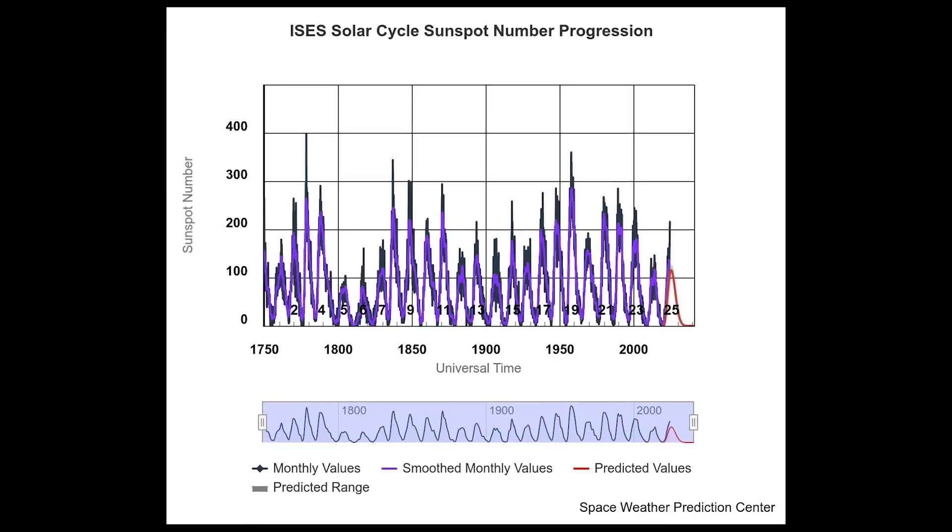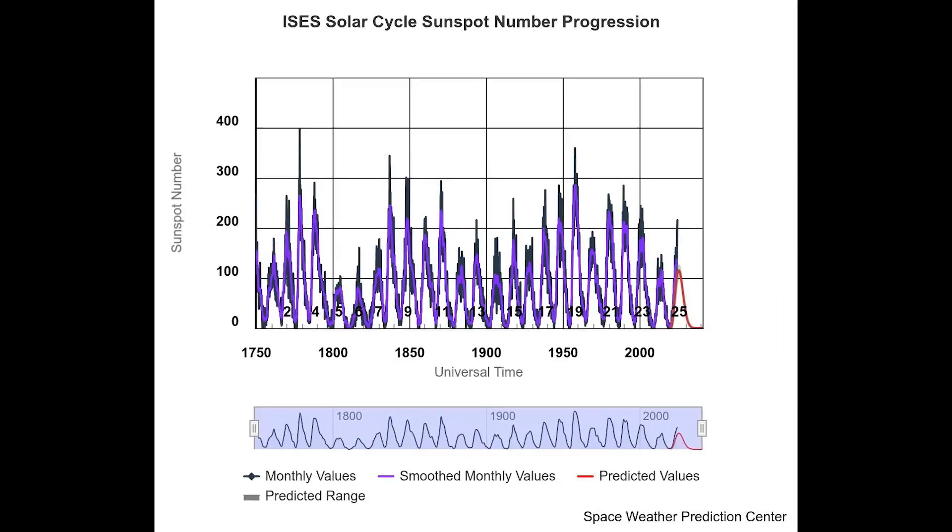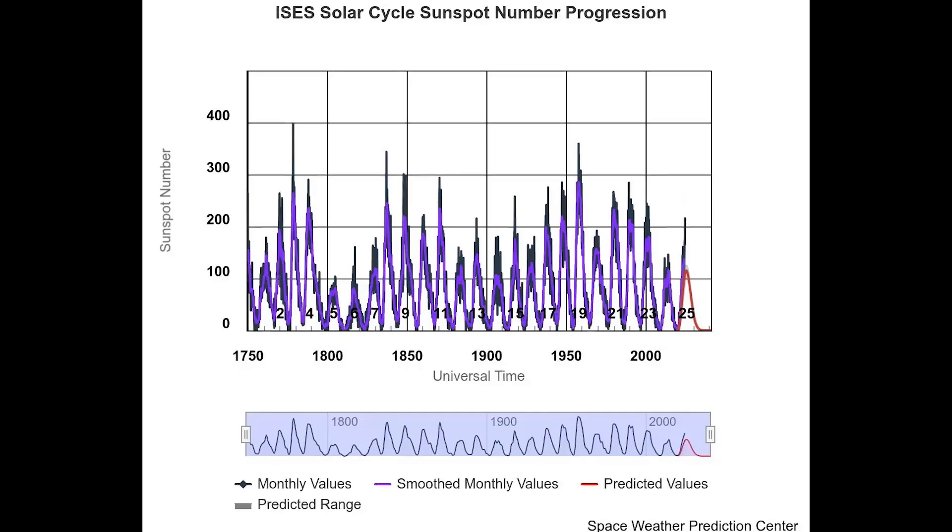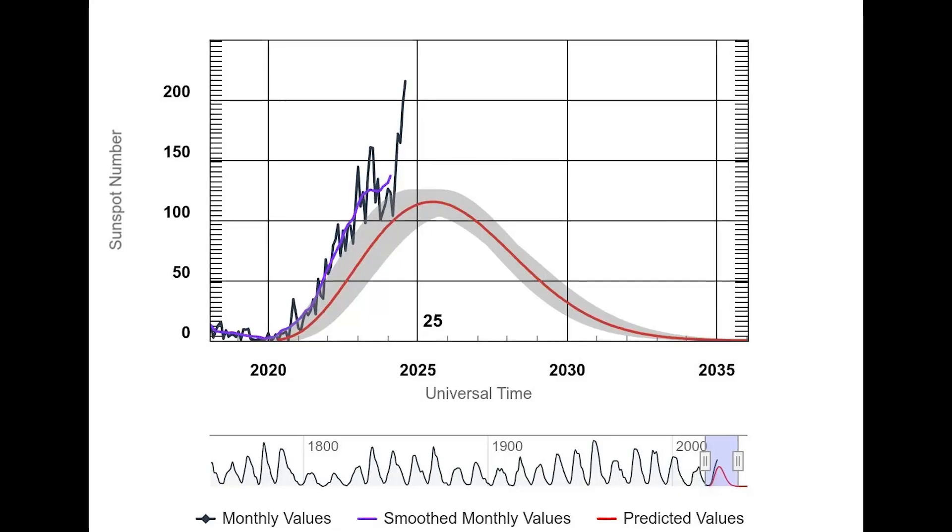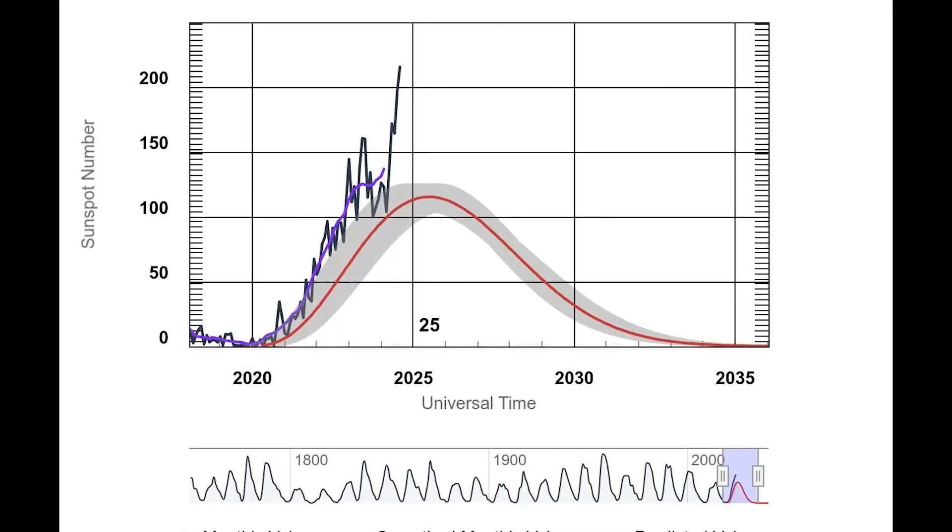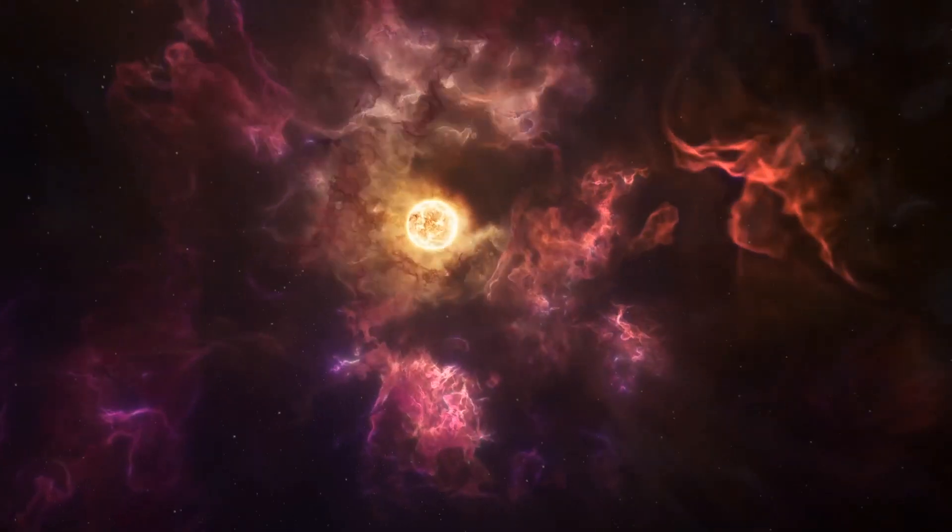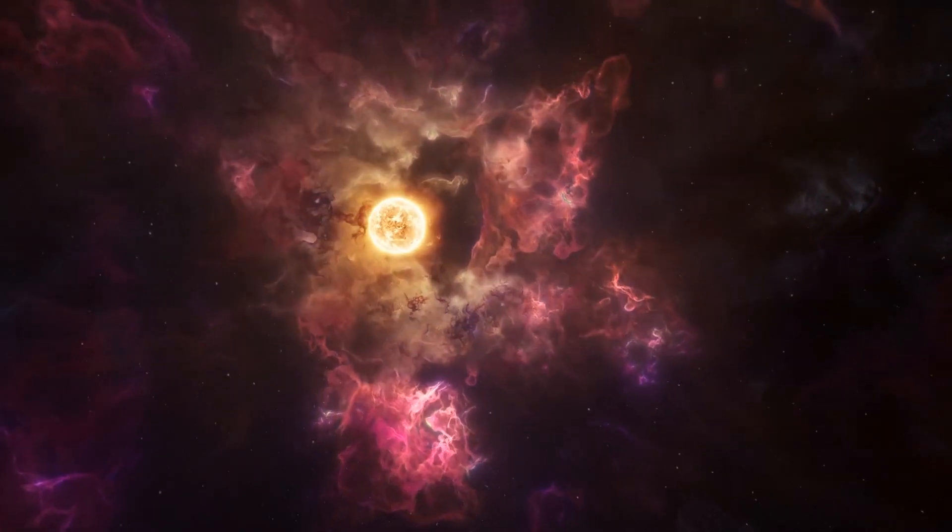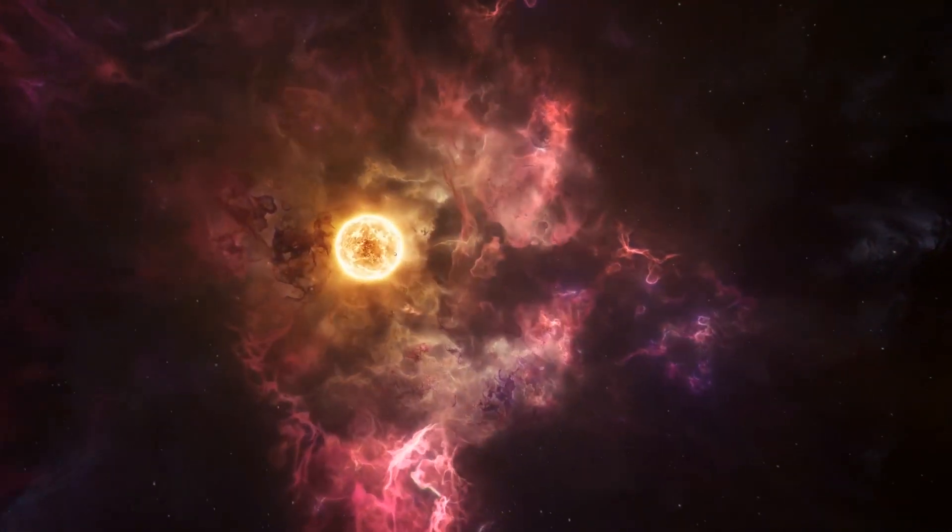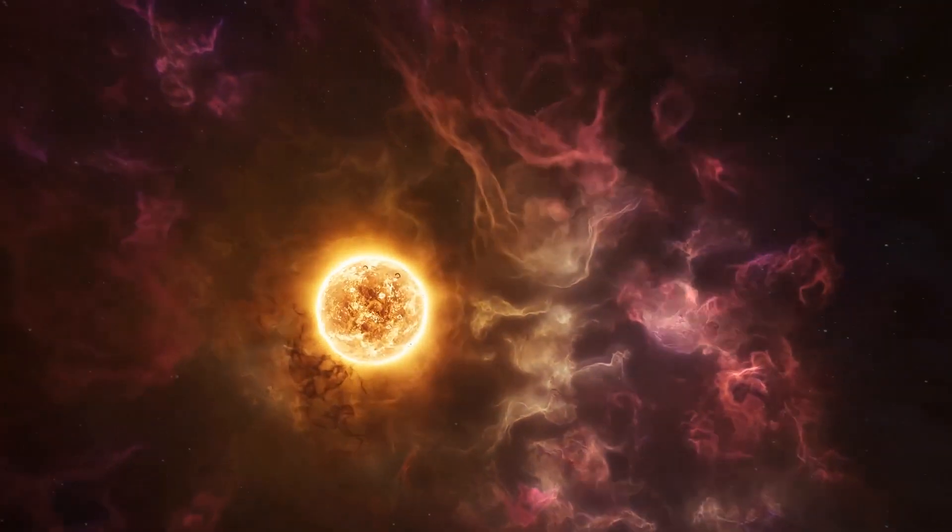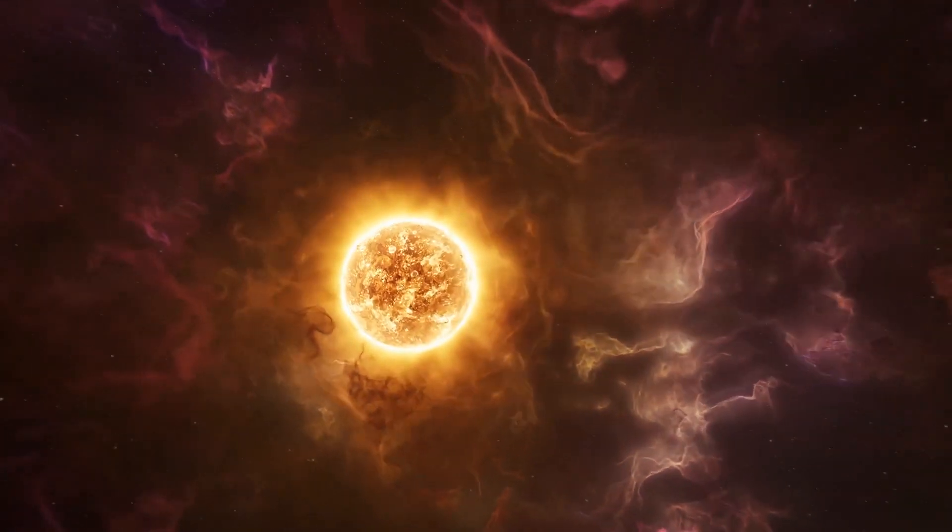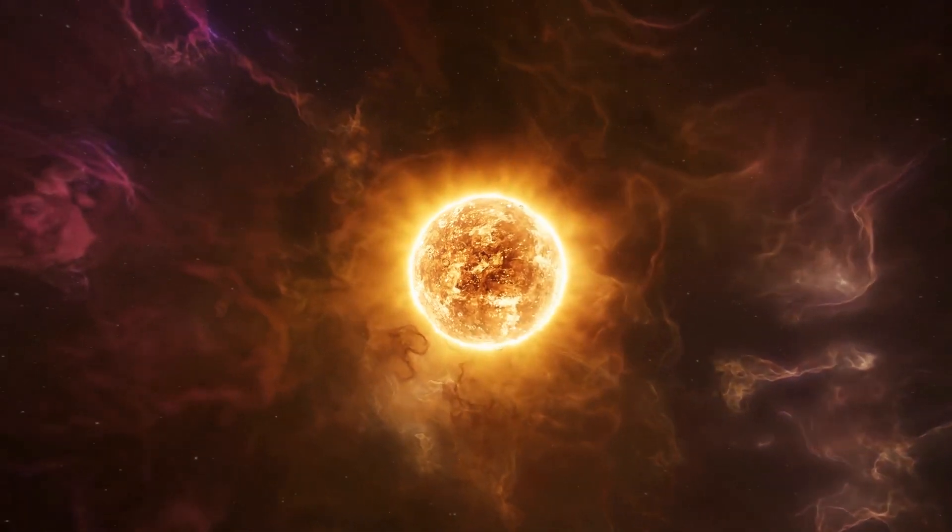Scientists will not be able to determine the exact peak of this solar maximum period for many months, because it's only identifiable after they've tracked a consistent decline in solar activity after that peak. However, scientists have identified that the last two years on the Sun have been part of this active phase of the solar cycle, due to the consistently high number of sunspots during this period.